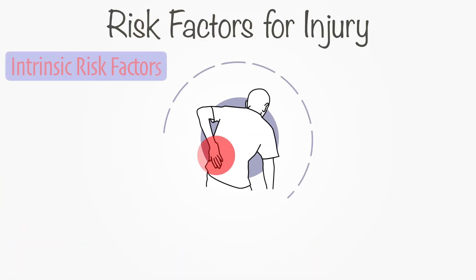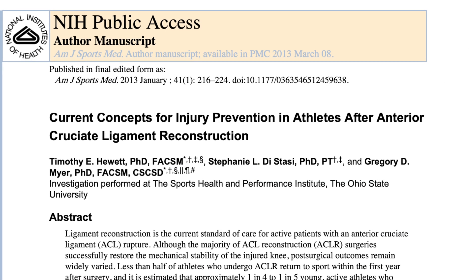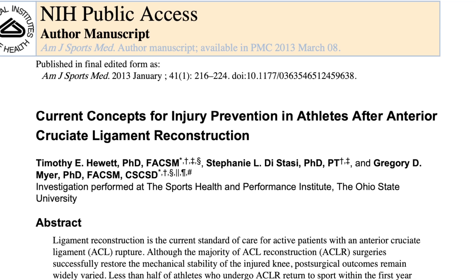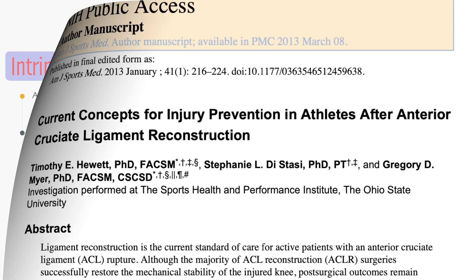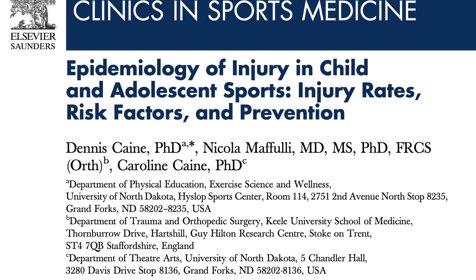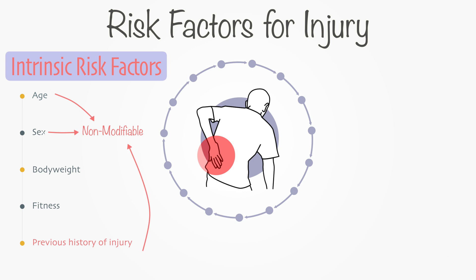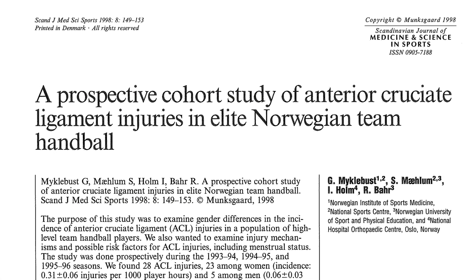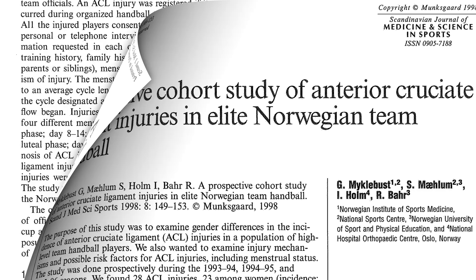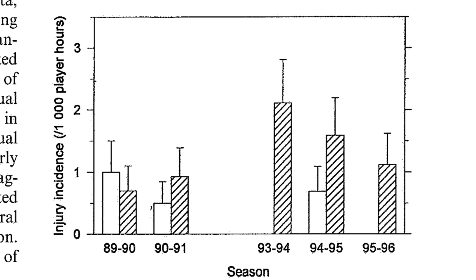Intrinsic risk factors include things like having a prior ligament injury. Athletes who have previously sustained a ligament injury have a two to tenfold increased risk of a similar injury in the future. Age is another non-modifiable intrinsic risk factor. Female athletes have a higher incidence of certain ligament injuries, especially injuries to the anterior cruciate ligament compared to males in similar sports.